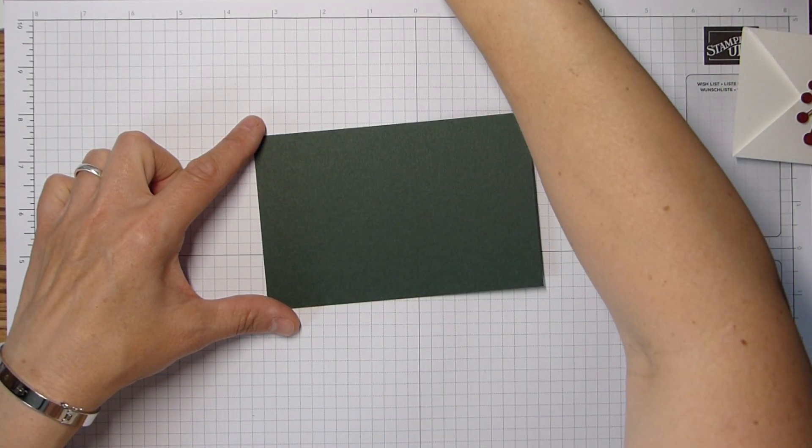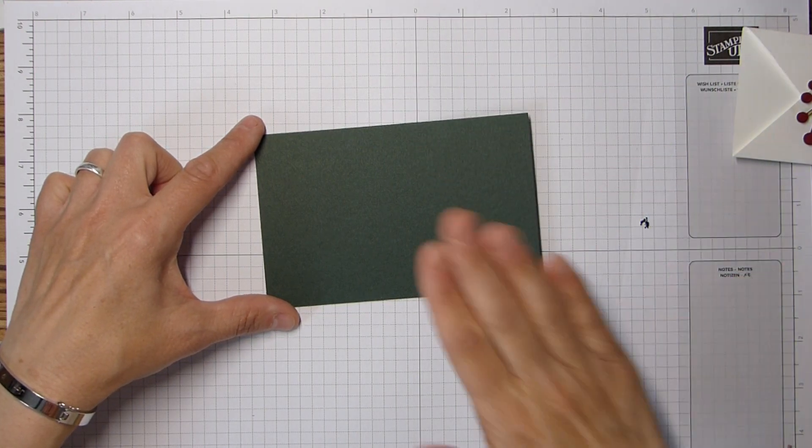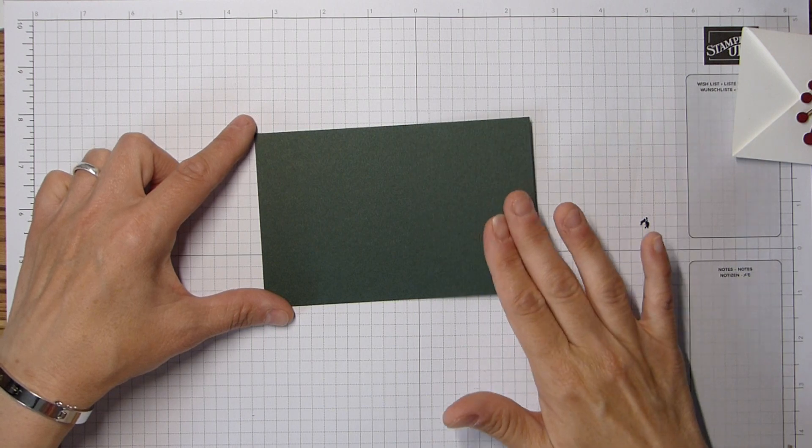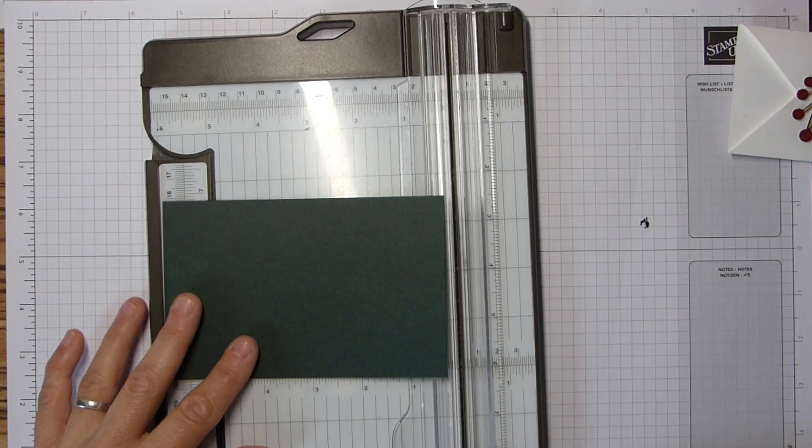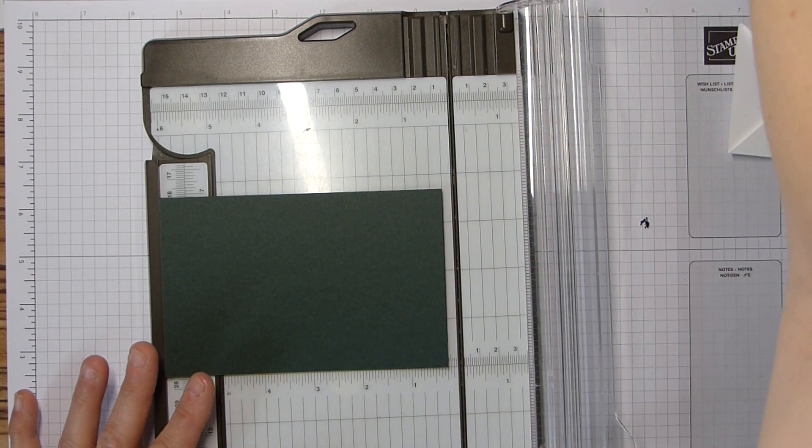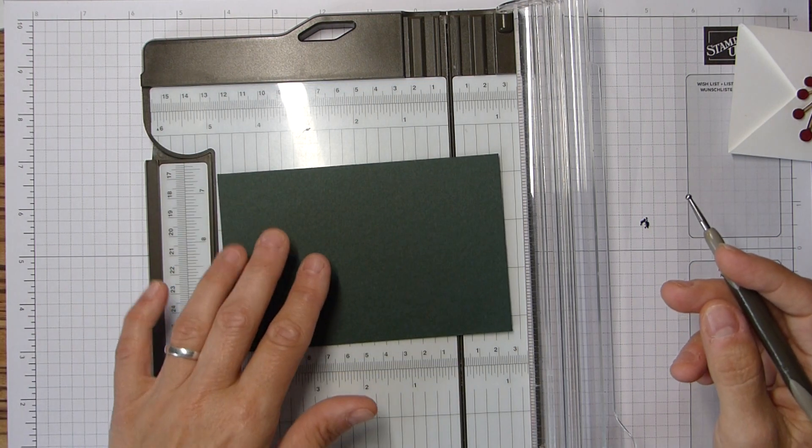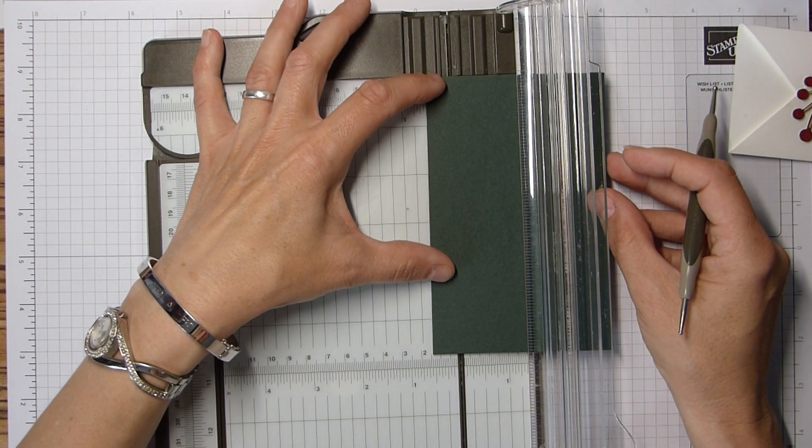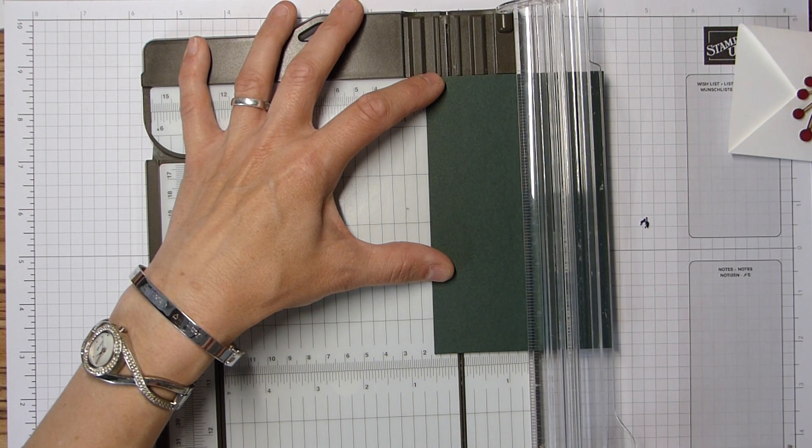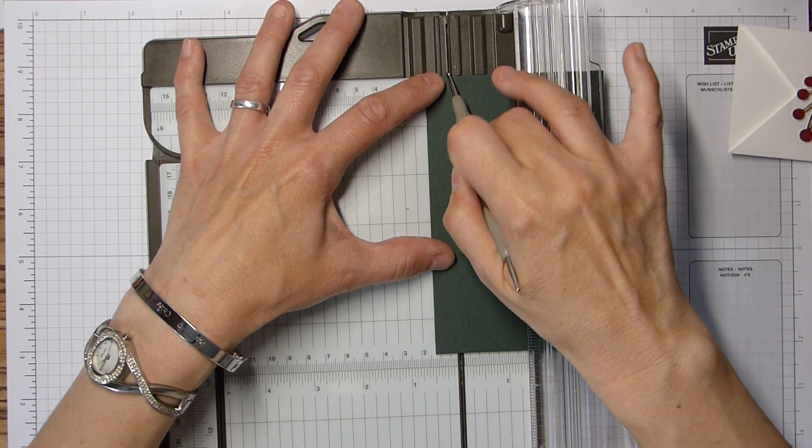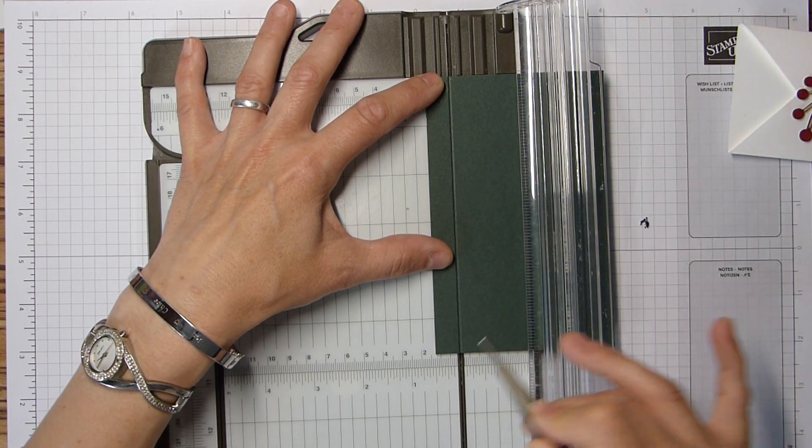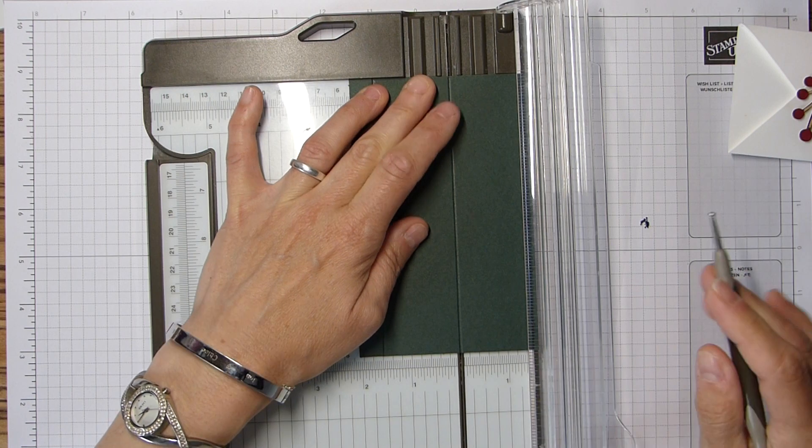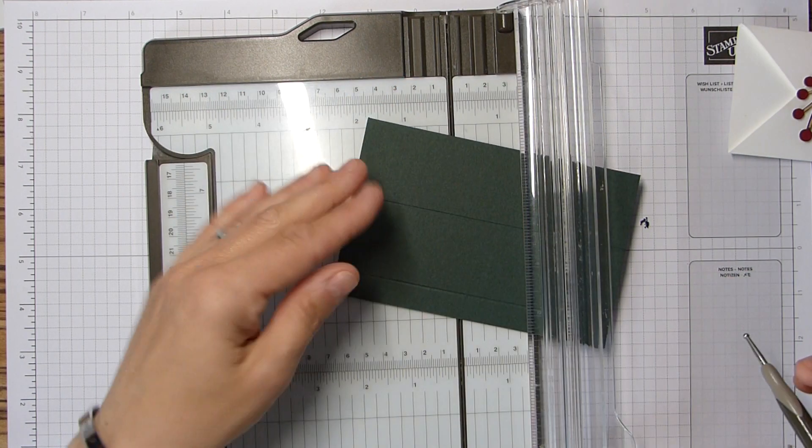My sleeve is 3 and 11 sixteenths by 5 and 3 quarters. That's 9.8 by 15.3 centimeters. I'm going to score on my trimmer just because I have some odd measurements. So on the short side, we're going to score at half an inch. And my scoring blade keeps falling out so I just leave it out now so I don't lose it. And I just use my scoring tool from my scoreboard.